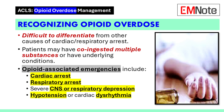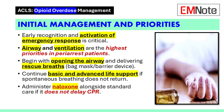Additional signs include hypotension or cardiac dysrhythmia when opioid toxicity is suspected. Initial management and priorities: Early recognition and activation of the emergency response system are critical.